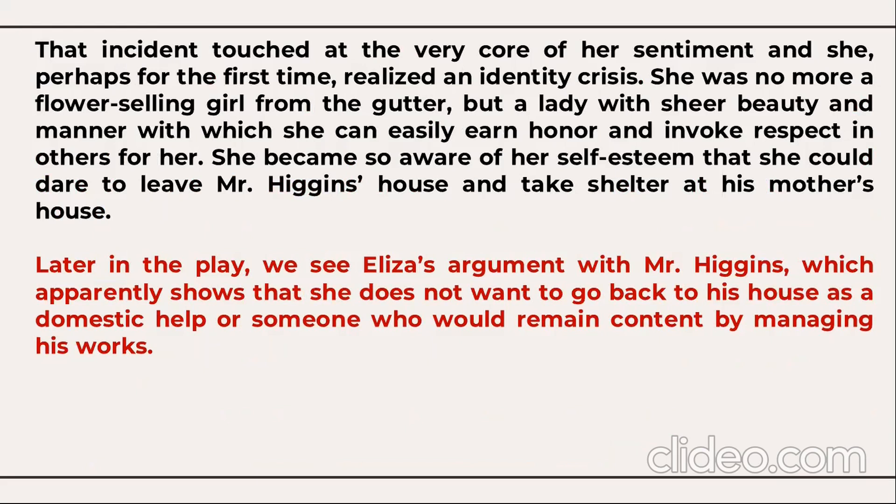She was no more a flower-selling girl from the gutter, but a lady with sheer beauty and manner with which she could earn honor and invoke respect. She became so aware of her self-esteem that she dared to leave Mr. Higgins' house and take shelter at his mother's house. Later in the play, we see Eliza's argument with Mr. Higgins, which shows that she does not want to go back to his house as a domestic help or someone who would remain content by managing his work.